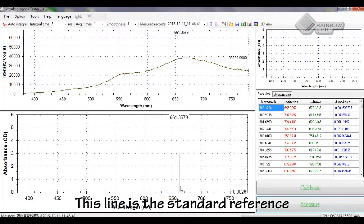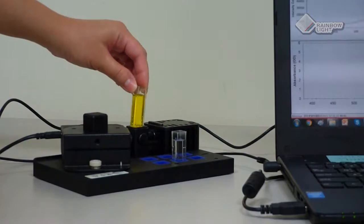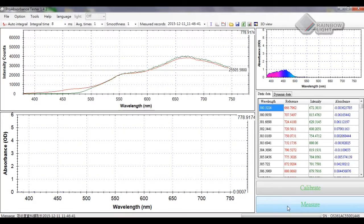After clicking calibrate, we will see this line is the standard reference. Now we can put the other sample, which is ink, in that tube rack and click the measure button.